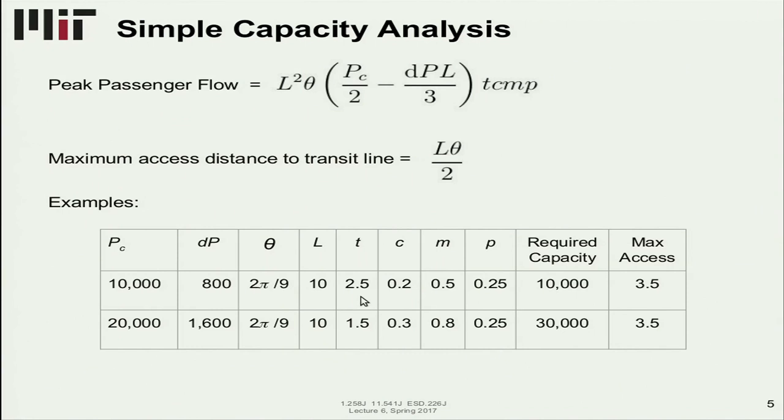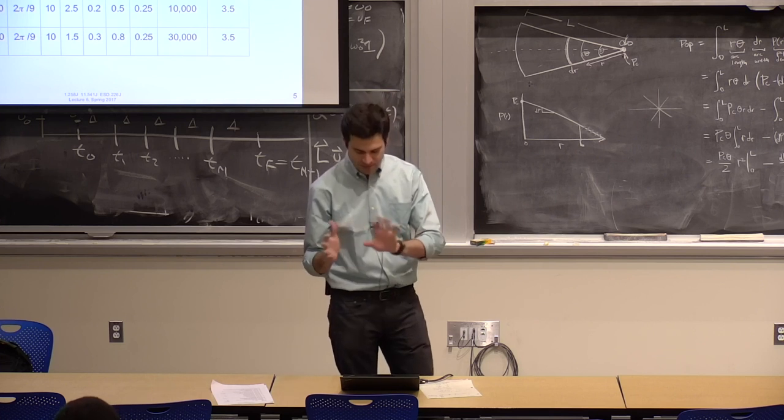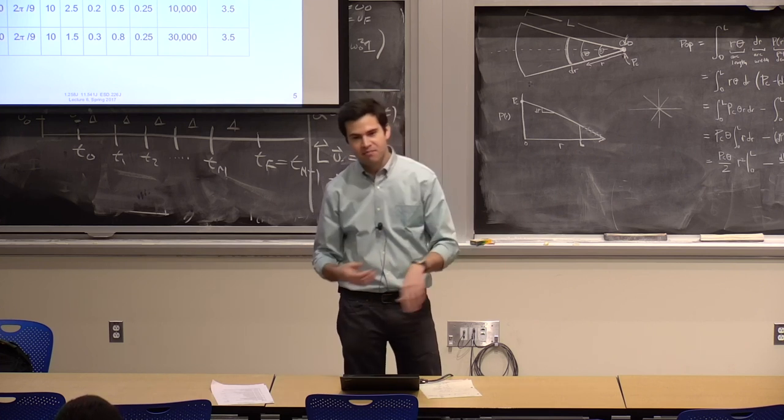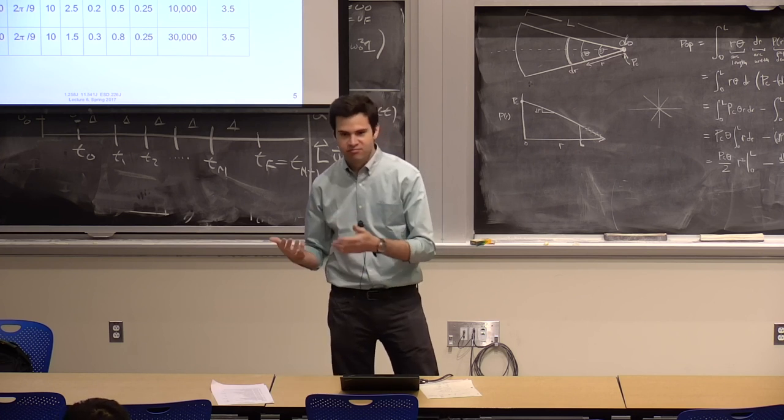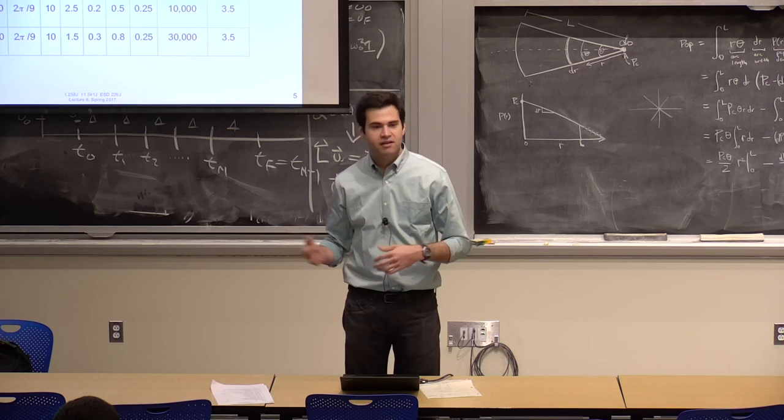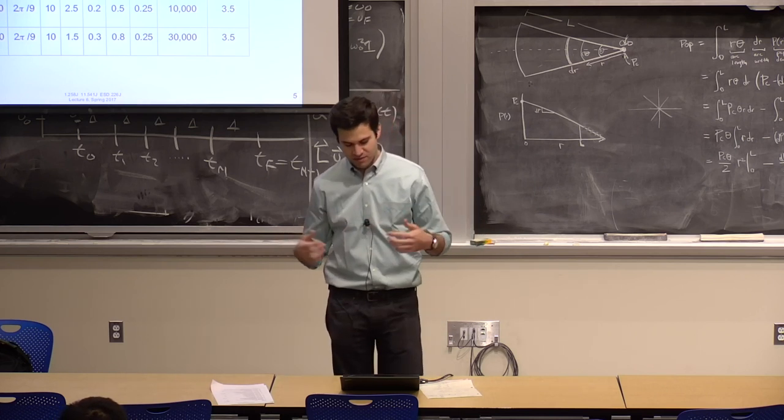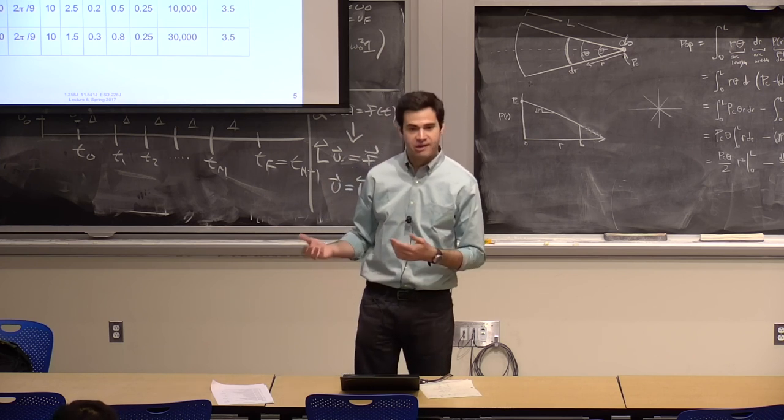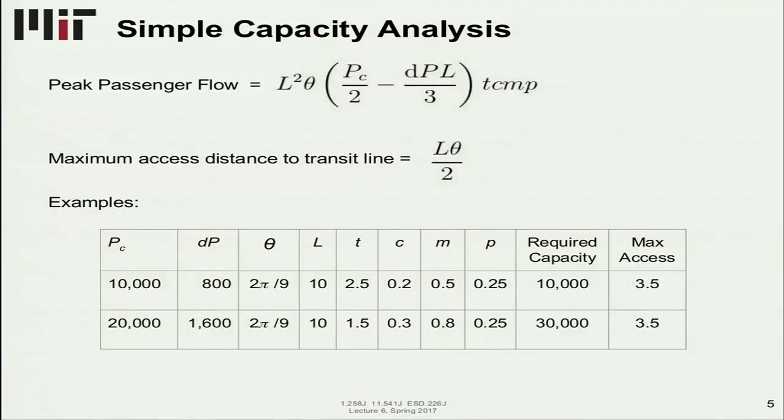We're assuming a 10 mile length. If we plug that in, we get a required capacity of 10,000 in the first scenario and 30,000 in the other scenario. And then from that, one could say, can I have a bus system serving 10,000 people per hour, or can I have a bus system or rail system serving 30,000 people per hour? This is the back of the napkin calculation. But it gives you an idea of, based on the characteristics of some city, what we would need.